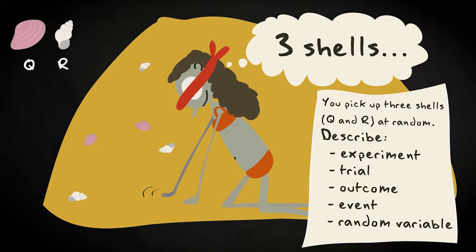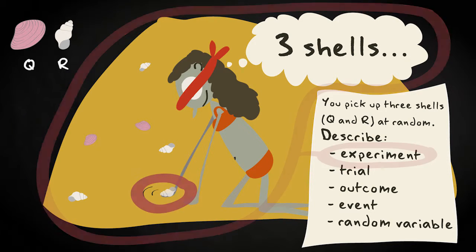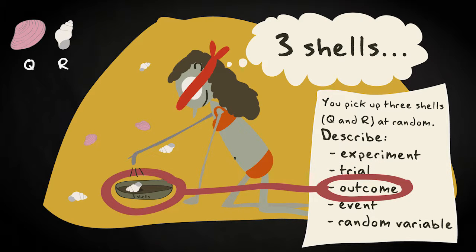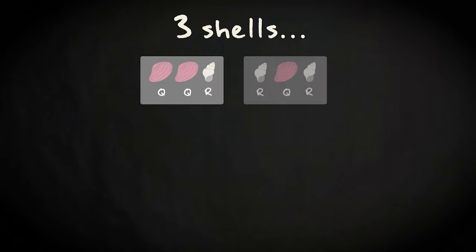The whole enterprise of picking three shells at random is the experiment. Each time you pick up a shell is a random trial, so the experiment consists of three trials. Each trial leads to an outcome — you will have picked up either a shell of type Q or R. At the end of the experiment, you will have outcomes that consist of combinations of three shells, for example QQR or RQR.